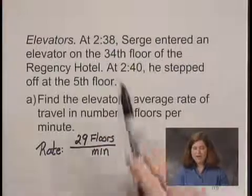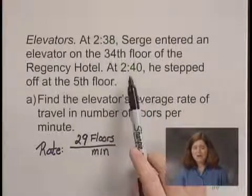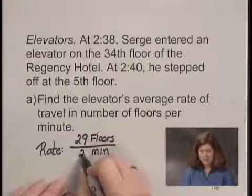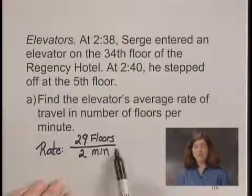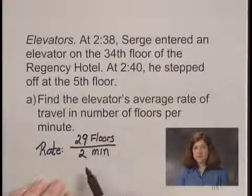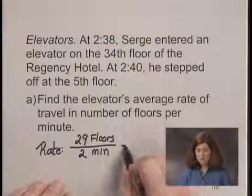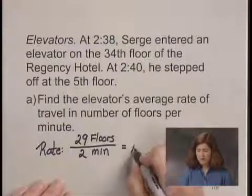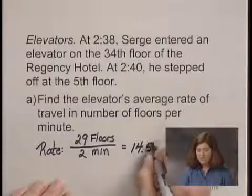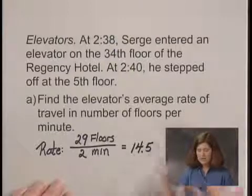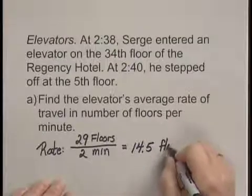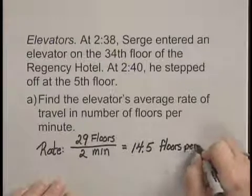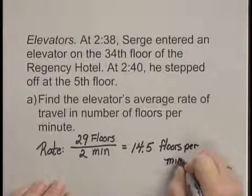If he got on at 2:38 and got off at 2:40, he traveled for 2 minutes. So his rate would be 29 floors in 2 minutes. Dividing 29 by 2, we get 14.5 floors per minute.